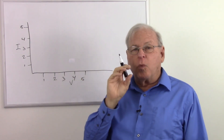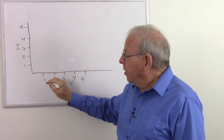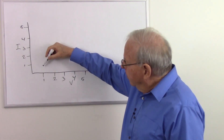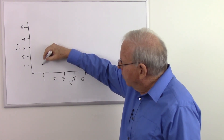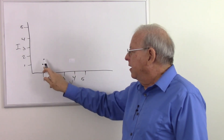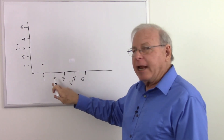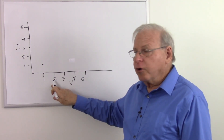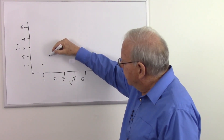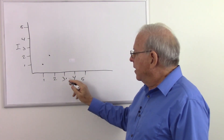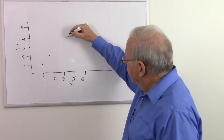Now let's say I have a 1 ohm resistor. If I apply 1 volt to a 1 ohm resistor, I'm going to get 1 amp of current — so my relationship goes right there: 1 volt gives us 1 amp. Now what happens if I put 2 volts across a 1 ohm resistor? 2 volts across 1 ohm gives me 2 amps. 3 volts will give me 3 amps. 4 will give me 4 amps.